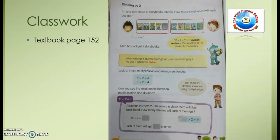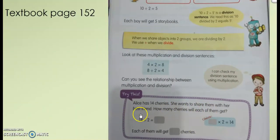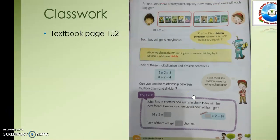From that example you can now do page 152. The question says: Alice has 14 cherries and wants to share them with her best friend — how many cherries will each of them get? Draw 14 cherries and 2 buckets, one for Alice and one for her friend. Use the grouping method, just like I did for the oranges, to divide the cherries equally. Write your answer, and in the next video I will share the correct answer.